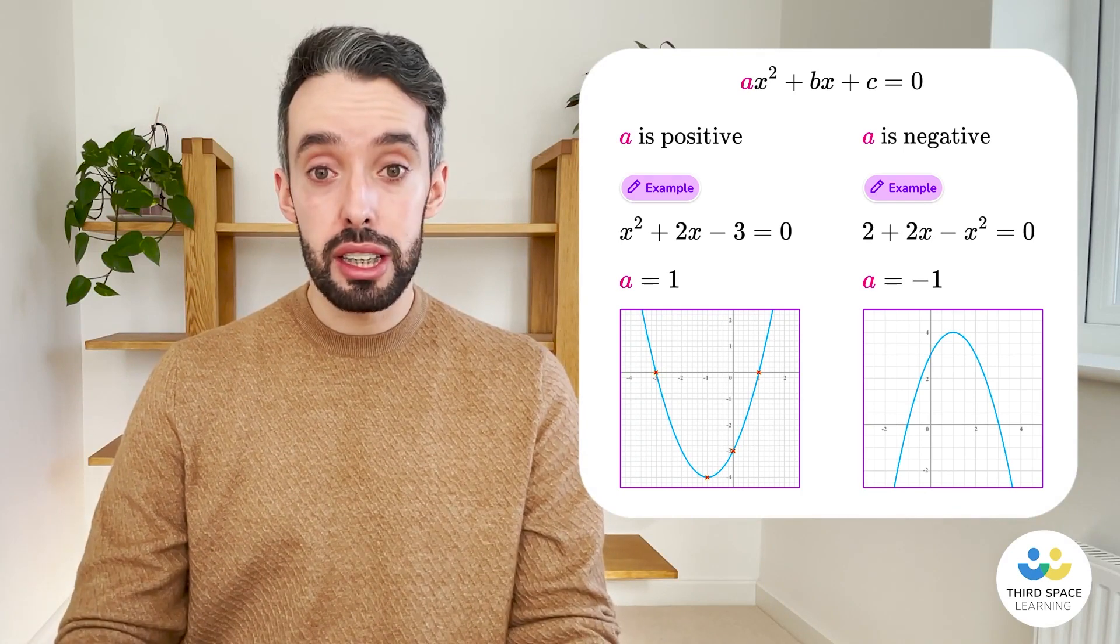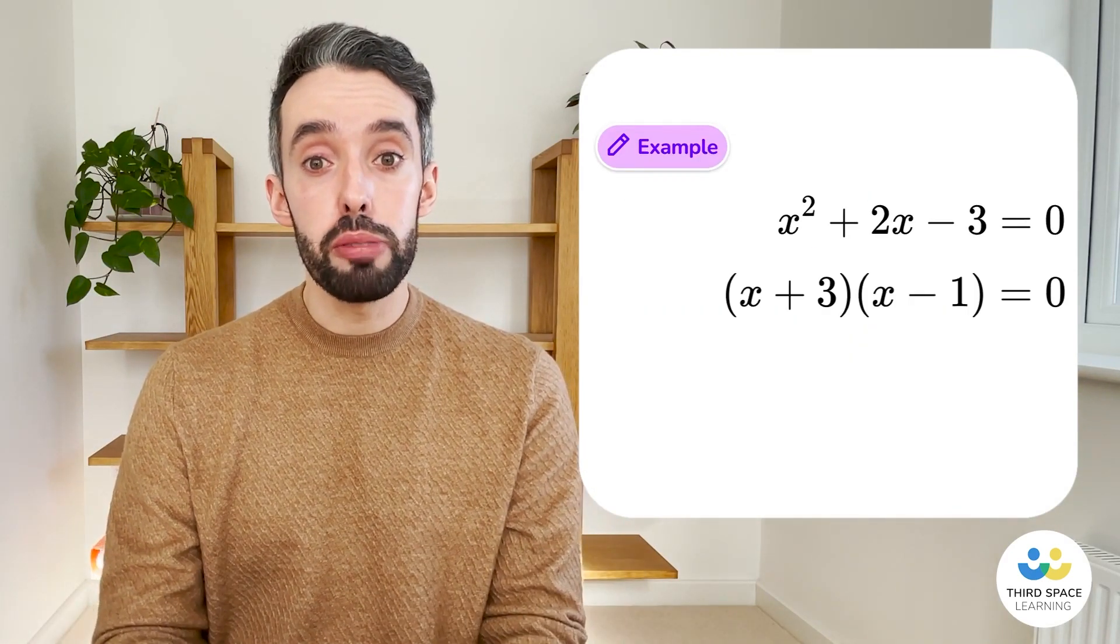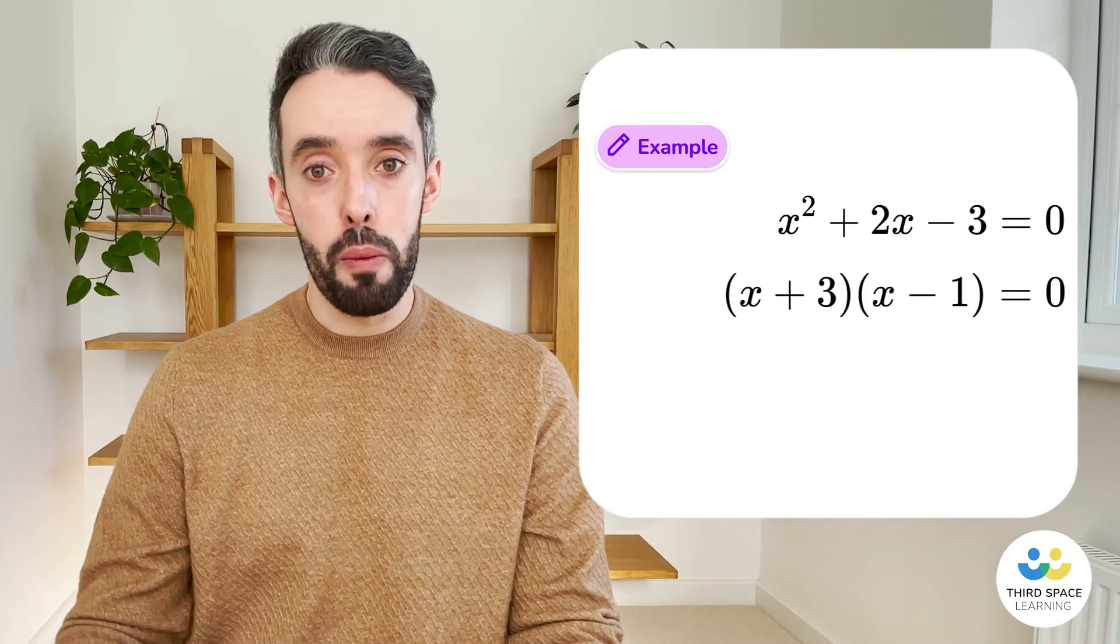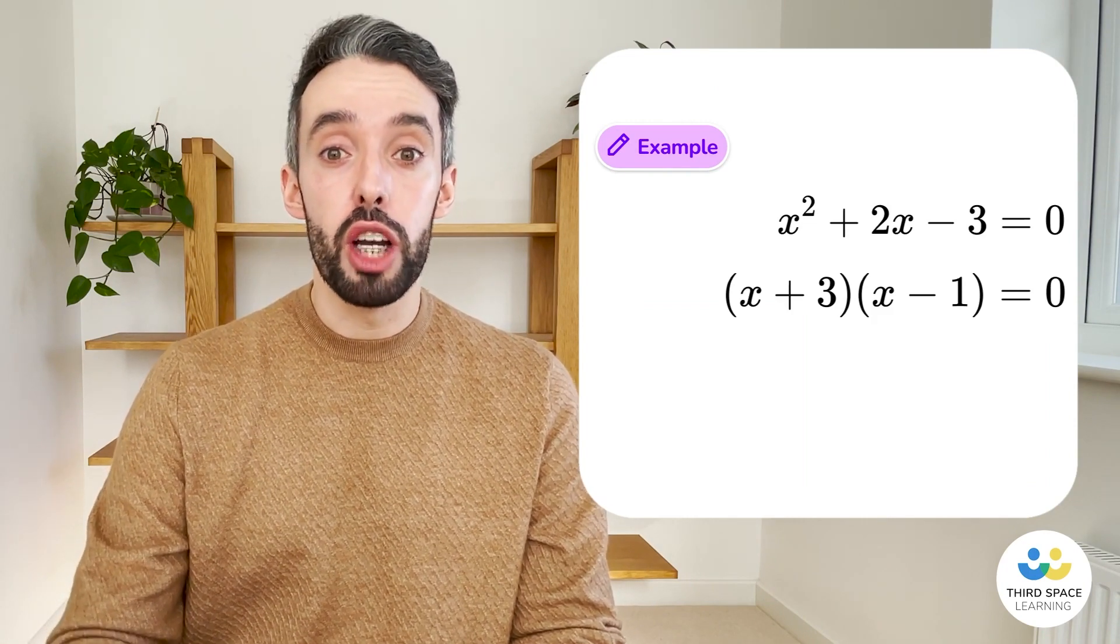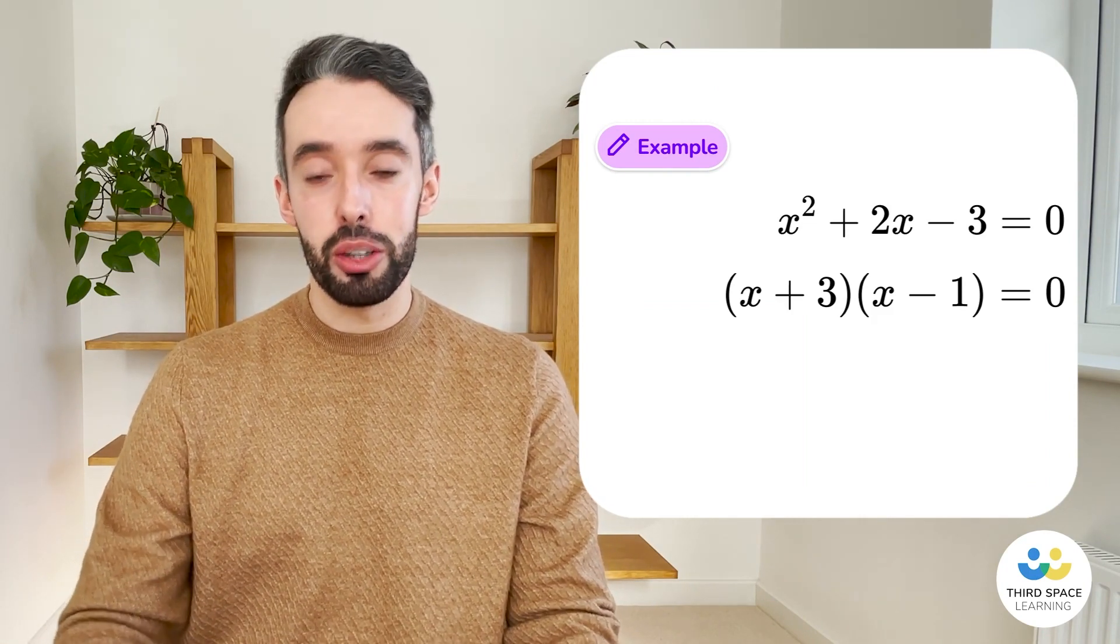If we're going to factorise it, we put it into two brackets that multiply together to equal zero. Check out the link in the description below for our video on factorising quadratics to see how to do it.